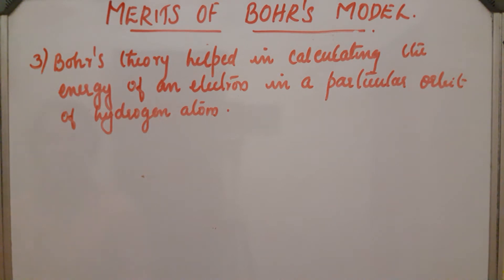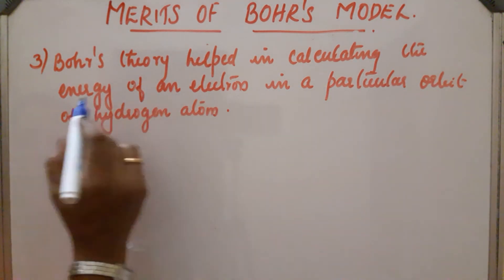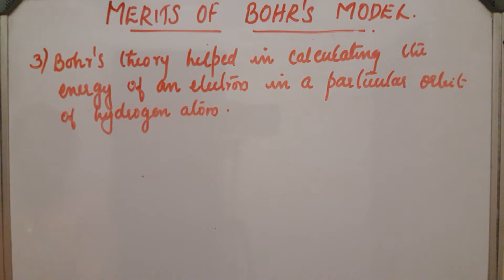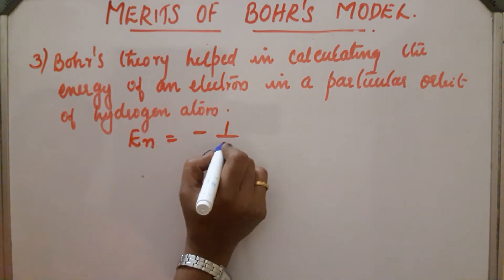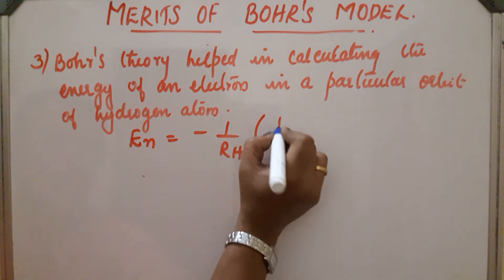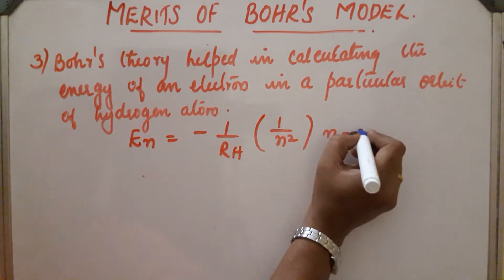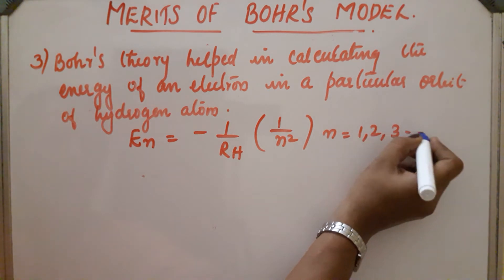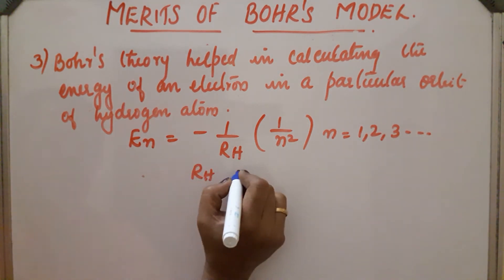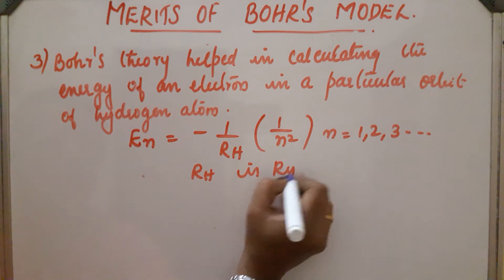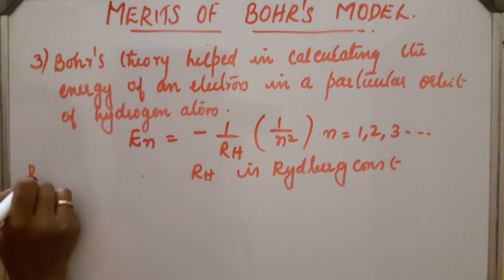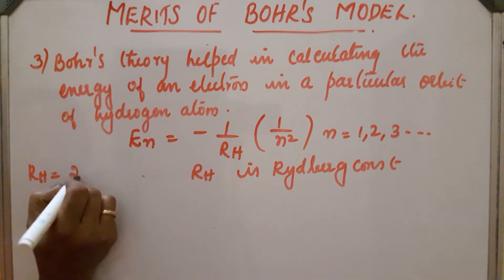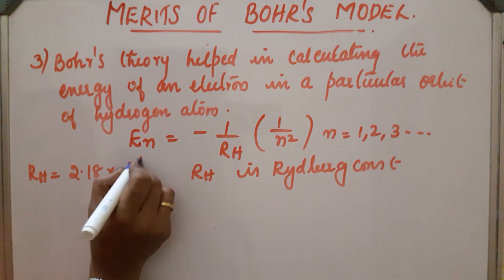Third point: Bohr's theory helped in calculating the energy of an electron in a particular orbit of hydrogen atom. That is, En will be equal to minus 1 by Rh divided by N², where N equals 1, 2, 3, etc. Rh is the Rydberg constant, and its value is equal to 2.18 × 10⁻¹⁸.